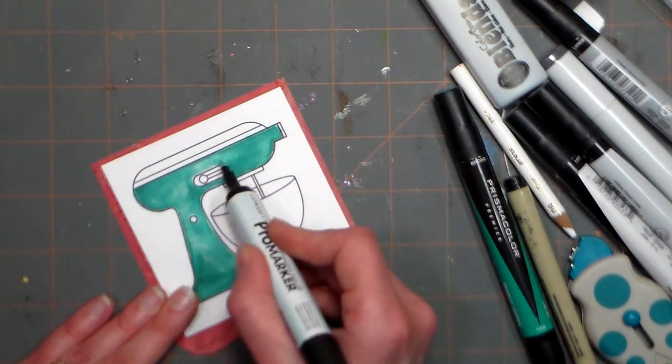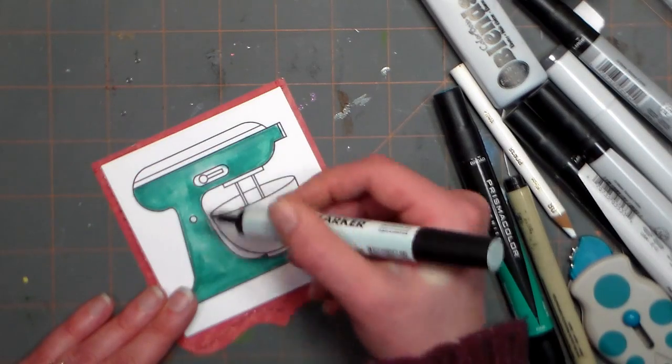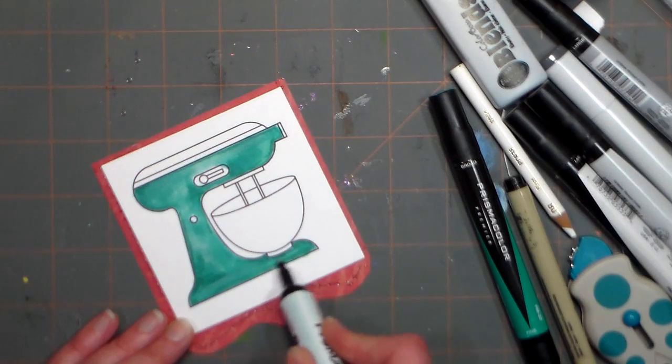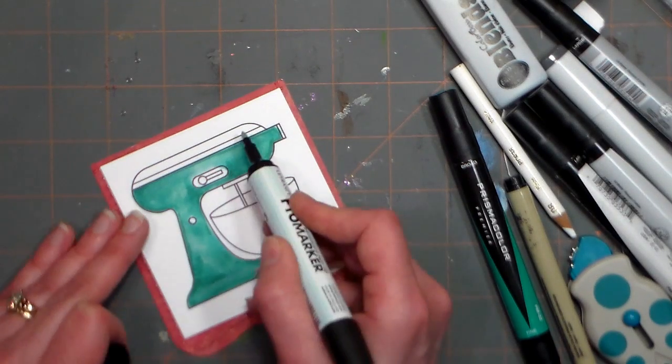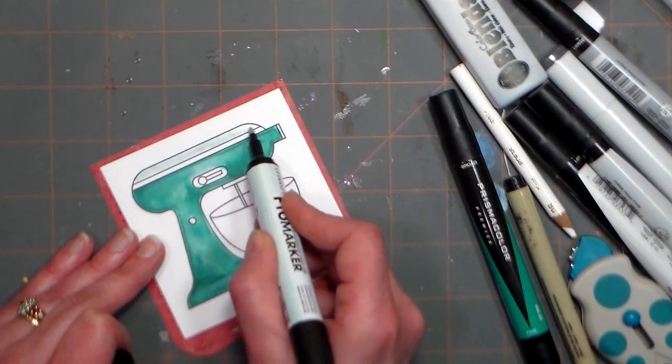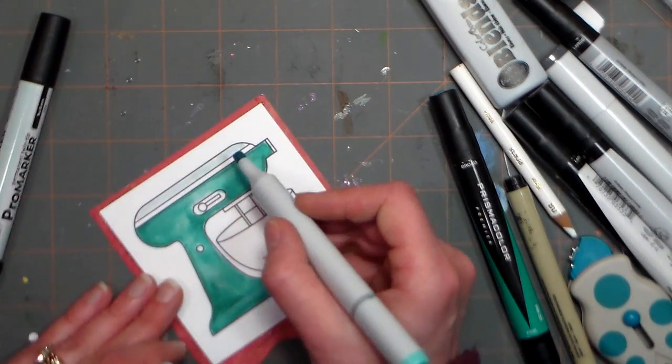And now use your lightest shade of marker again to go in there and kind of push the ink around and add some highlights. The lighter color markers that have more alcohol versus pigment will actually act almost like an eraser, so you can kind of like get back to the white of the paper. Then go up to the top part of the mixer that we didn't color yet, go back in with the same three markers the same way we did before, and complete the rest of the green coloring.